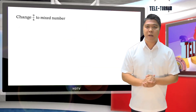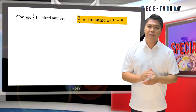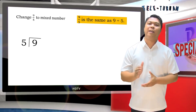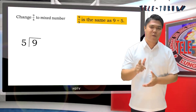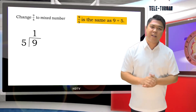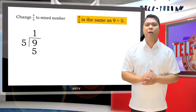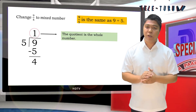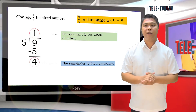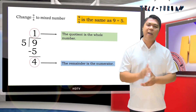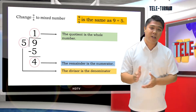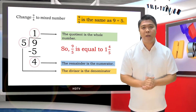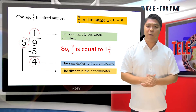Change 9/5 to a mixed number. 9/5 is the same as 9 ÷ 5. 9 ÷ 5 = 1, with 1 × 5 = 5, and 9 − 5 = 4. The quotient 1 is the whole number, the remainder 4 is the numerator, and the divisor 5 is the denominator. So 9/5 = 1 and 4/5.